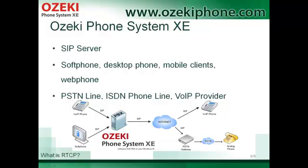As you can see in the pictures, Azaki Phone System AXI can operate many phone types — for example, a soft phone, desktop phone, and any type of mobile client or web phone can be a SIP extension. It can manage more types of external lines as well, such as a PSTN line, ISDN phone line, or a VoIP provider.